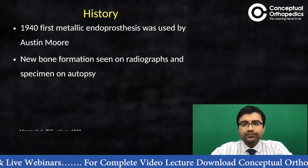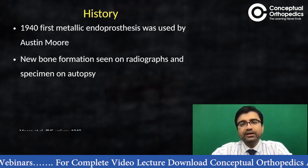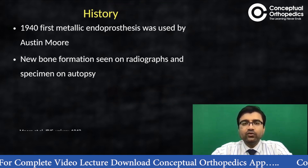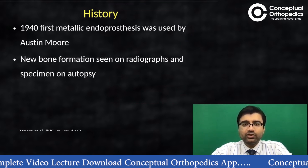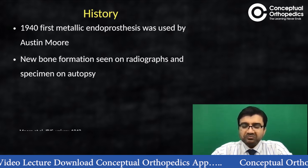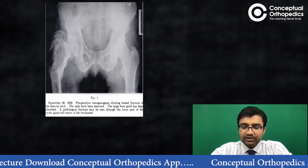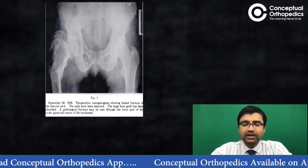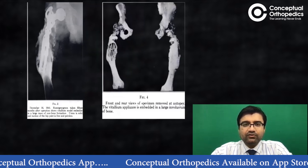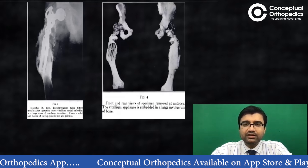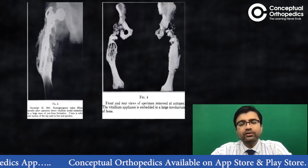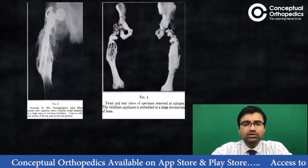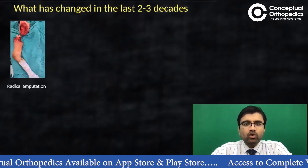Though we are becoming more familiar with mega prostheses in the last two decades, if we look at history, in the 1940s the first endoprosthesis was used by Austin Moore. Pictures from the 1940s are available online showing this implant used for bony lesions — probably one of the most primitive forms used. Nowadays we have come a long way with many new developments.